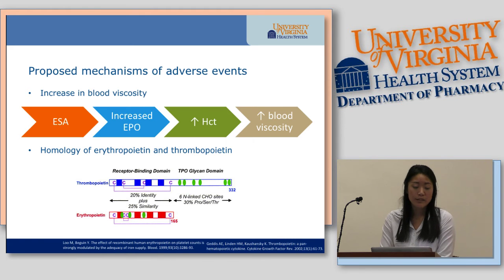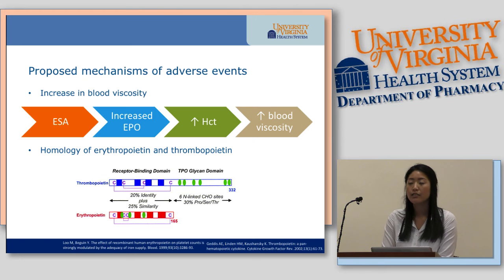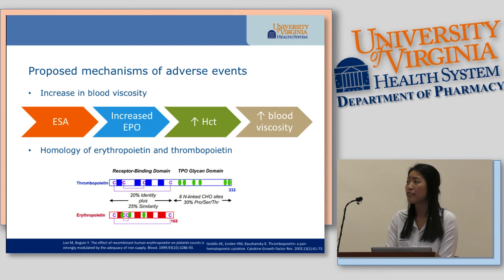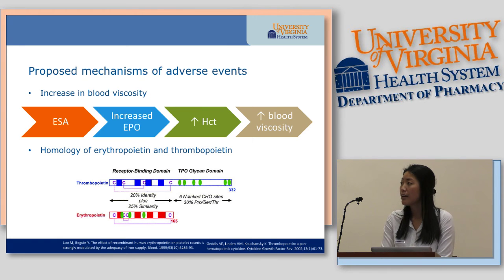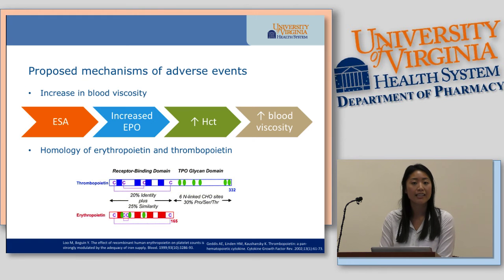Looking at the proposed mechanisms of these adverse events: when you administer erythropoietin-stimulating agents, you have increased EPO, which increases hematocrit, which increases blood viscosity. This can lead to increases in blood pressure and increased risk of clotting. There is also found to be a homology between epoetin and thrombopoietin — about 20% identity and 25% similarity. In rat studies, rats injected with 10, 50, and 150 units of recombinant EPO showed that platelet counts actually increased at higher concentrations.